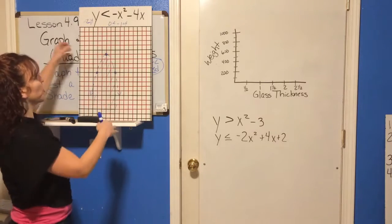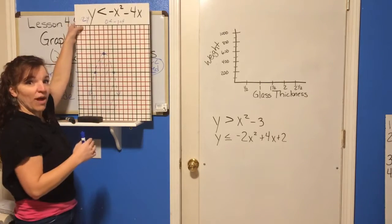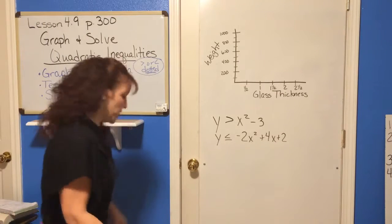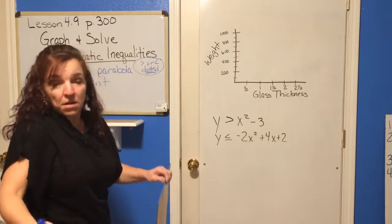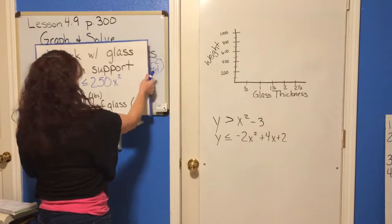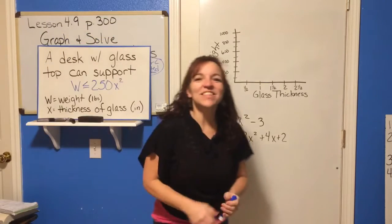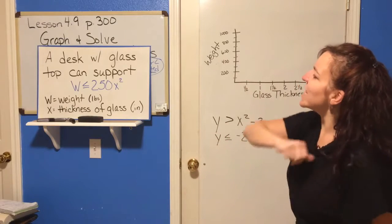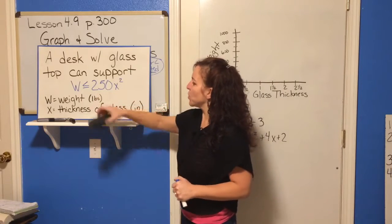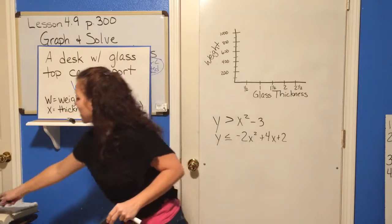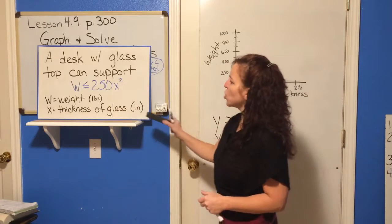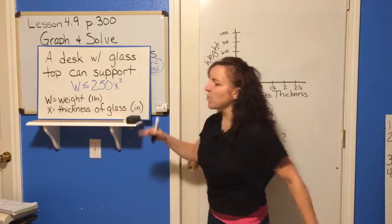The only tricky thing is making sure you use dotted or solid depending on your inequality sign, and then check a test point to determine which side to shade. Now, there really are real-life situations for these. Here's one: a desk with a glass top can support a weight represented by w is less than or equal to 250x squared, where w is the weight in pounds and x is the thickness of the glass in inches.